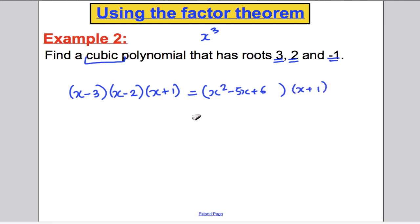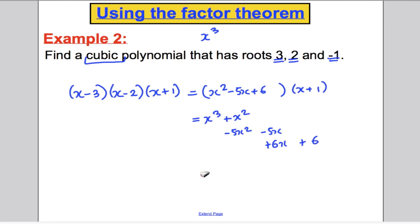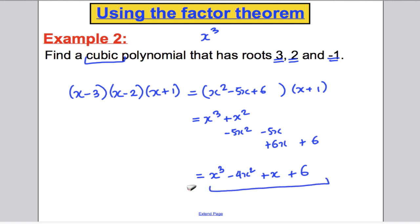Multiplying each term: x squared times x gives x cubed; x squared times 1 gives x squared; minus 5x times x gives minus 5x squared; minus 5x times 1 gives minus 5x; 6 times x gives 6x; 6 times 1 gives 6. Tidying up and adding together: x cubed minus 4x squared plus x plus 6. That is the cubic polynomial with roots 3, 2, and minus 1.